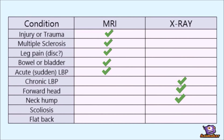Scoliosis is a structural curvature in the spine, and again we want to track and measure the bony alignment of the vertebra — so x-ray. If you have flat back posture, the curve in your lower back is decreased and looks relatively flat. This usually means there's been degeneration and wear in the discs, so we want to look at the curve and the bony vertebra that make up that curve — x-ray.